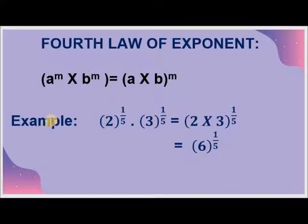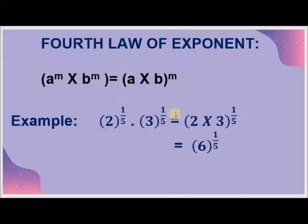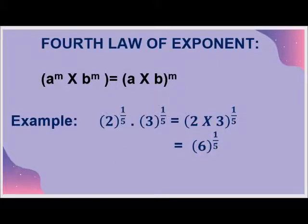For example, if we have 2 raised to the power 1 by 5 multiplied by 3 raised to the power 1 by 5, we notice the base is different and the power is the same. So we multiply these numbers: 2 into 3 to the whole power 1 upon 5, giving us 6 to the whole power 1 by 5.